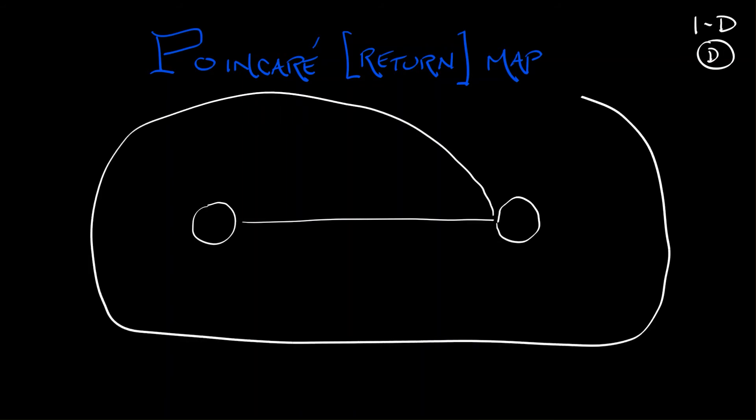We're doing this in order to get a Poincaré return map, a one-dimensional discrete time dynamical system defined on this branch line. So given our geometric Lorenz attractor, focusing on that branch line, pick a point on that branch line.